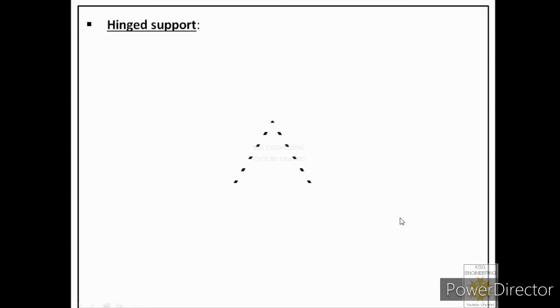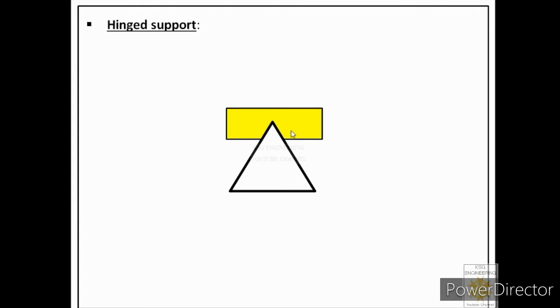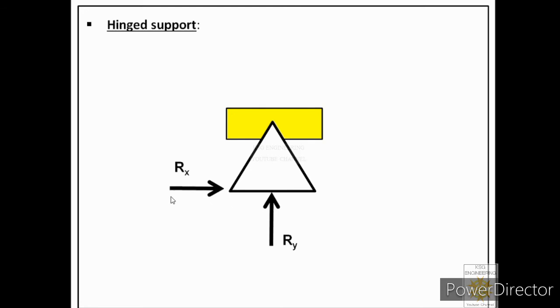Next we will talk about hinge support, also known as pin support. A hinge support restricts two types of motion: the body cannot move along the surface and cannot move normal to the surface. However, the body can rotate. Therefore, a hinge support provides two body constraints — one normal to the surface and one along the surface.